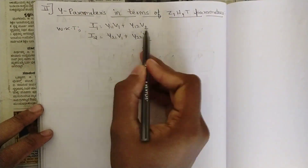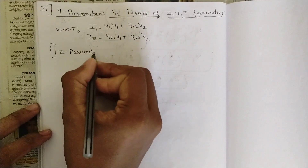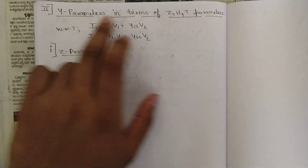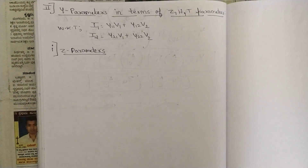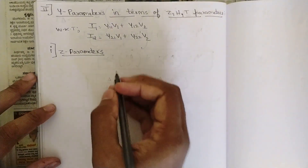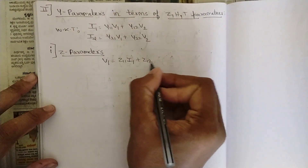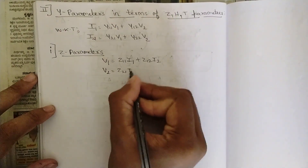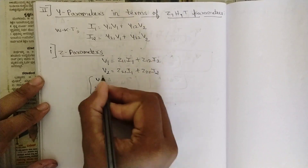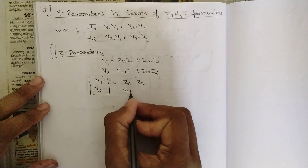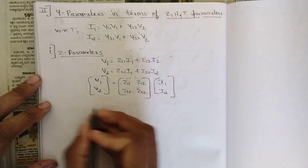I have written the set of equations for Y parameters. First let us represent Y parameters in terms of Z parameters. As I mentioned in my previous video, Y parameters in terms of Z parameters and Z parameters in terms of Y parameters should be solved using Crammer's rule only — it applies to only these two combinations. Write the set of equations for Z parameters: V1 = Z11·I1 + Z12·I2, V2 = Z21·I1 + Z22·I2. Represent this in matrix form: [V1, V2] = [Z11, Z12; Z21, Z22] · [I1, I2]. Now apply Crammer's rule.